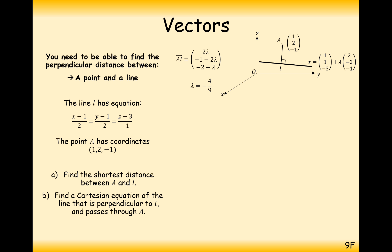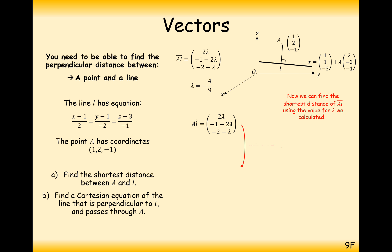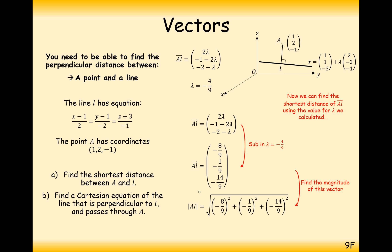We substitute lambda equals minus 4 over 9 into the vector from A to L, since that value of lambda is when the distance is at its shortest. Then all we need to do is find the magnitude of this vector — top value squared, plus second value squared, plus third value squared — and we get the square root of 29 over 3.